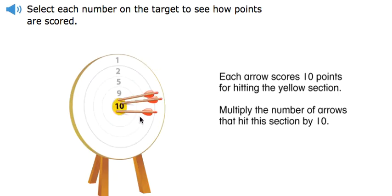Each arrow scores ten points for hitting the yellow section. Multiply the number of arrows that hit this section by ten.